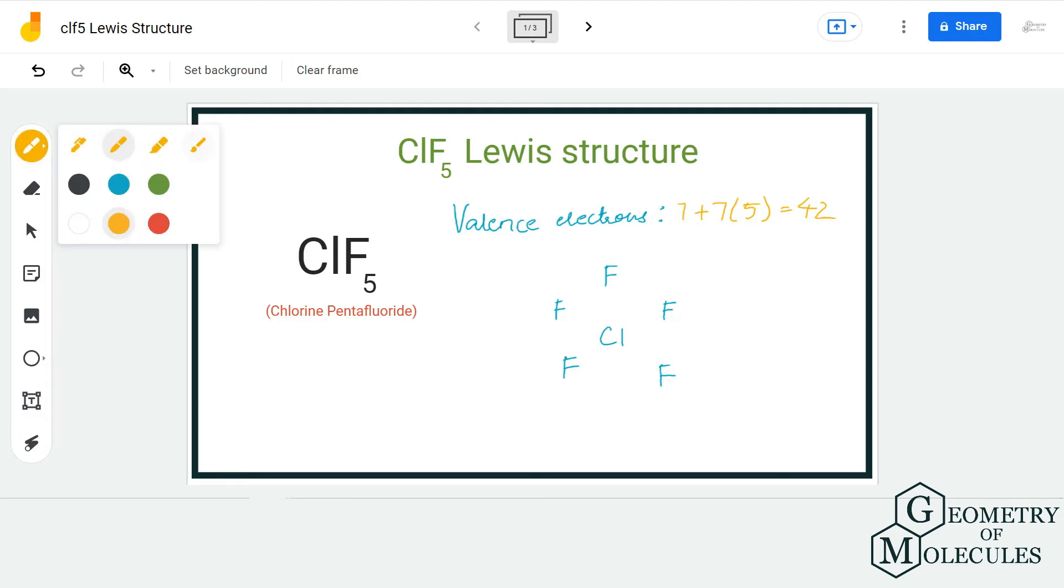Doing that we will be using up 10 out of 42 valence electrons and now we are left with 32 electrons. So these electrons will be placed around fluorine atoms first.